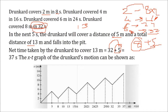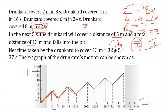The x-t graph will be zigzag. We take x from 2 to 14 and time up to 40. He goes forward 5 steps (5 seconds), returns 3 steps (3 seconds), making each cycle 8 seconds. The graph shows this zigzag motion going forward and backward repeatedly until the drunkard reaches 13 meters and falls into the pit at 37 seconds.